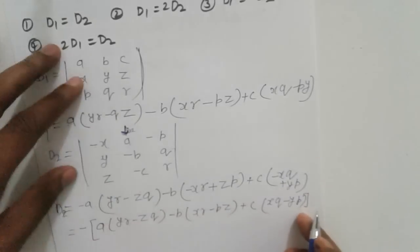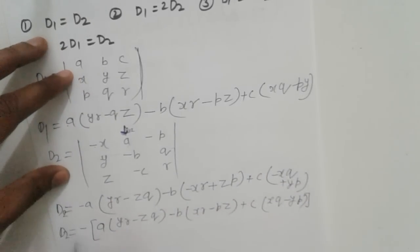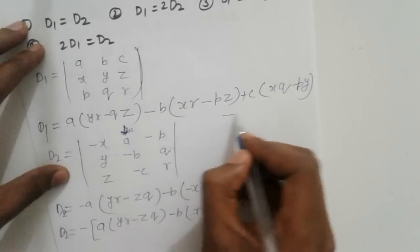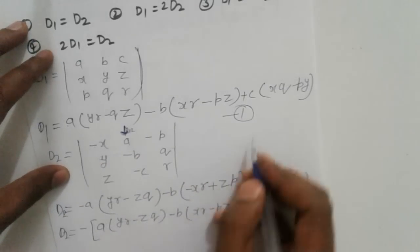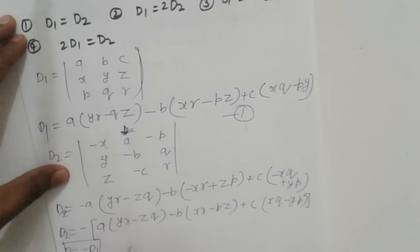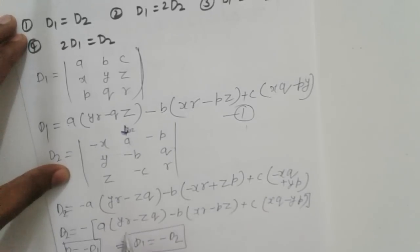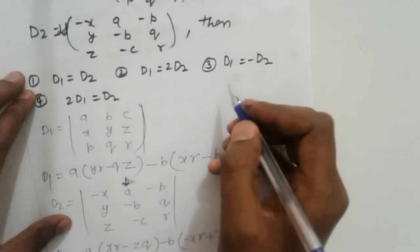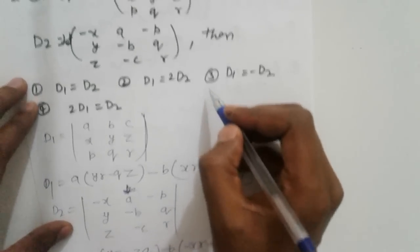After simplification, using equation (1), we get D2 equals minus D1, or equivalently D1 equals minus D2. So option third is correct.